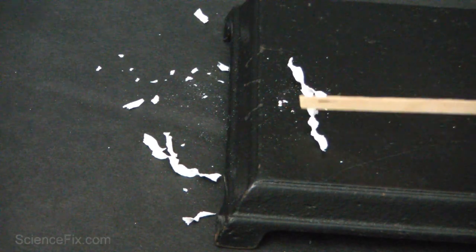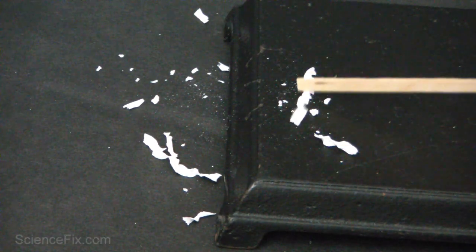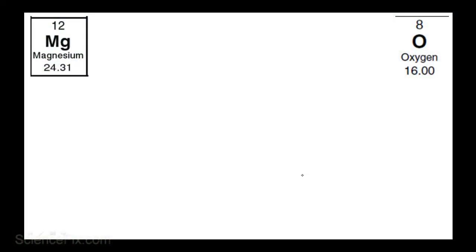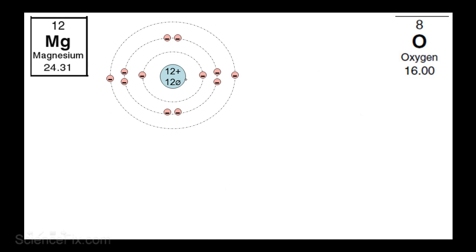And how do magnesium atoms bond with oxygen atoms? Well, let's take a look at how all that works. Magnesium has 12 positive protons, has equal number of negative electrons, 12.